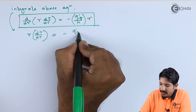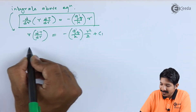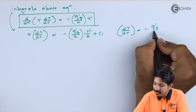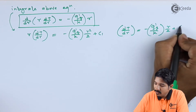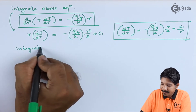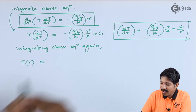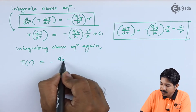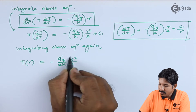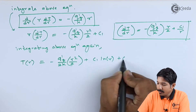Integrating the rearranged equation gives: r ∂T/∂r = -Q'_G/K · r²/2 + C₁. Dividing through by r gives dT/dr = -Q'_G/K · r/2 + C₁/r. Integrating again gives the temperature profile: T(r) = -Q'_G/(4K) · r² + C₁ ln(r) + C₂.